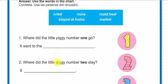The number two: Where did the little piggy number two stay? ¿En dónde se quedó el puerquito número dos? It... ¿Qué le ponemos? Stayed at home, right? Se quedó en casa. It stayed at home. Esa sería la respuesta para la segunda.